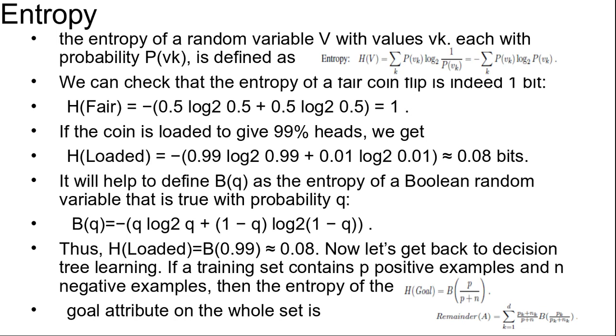Consider an unfair coin that comes up heads 99% of the time. Intuitively this coin has less uncertainty than the fair coin. If we guess heads, we will be wrong only one percent of the time. So, we would like it to have an entropy measure that is close to zero but positive.